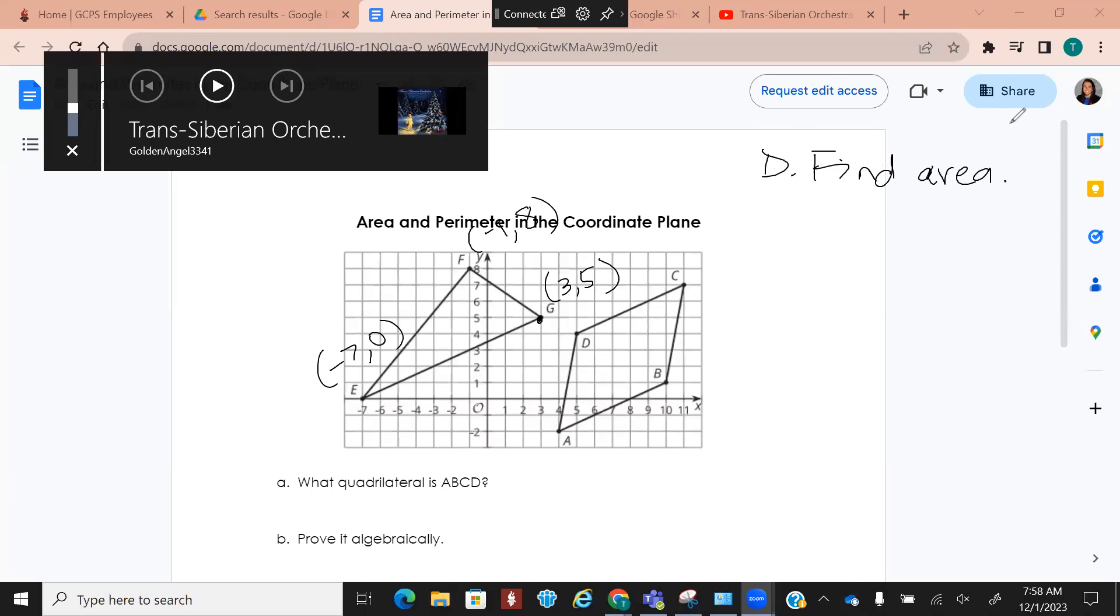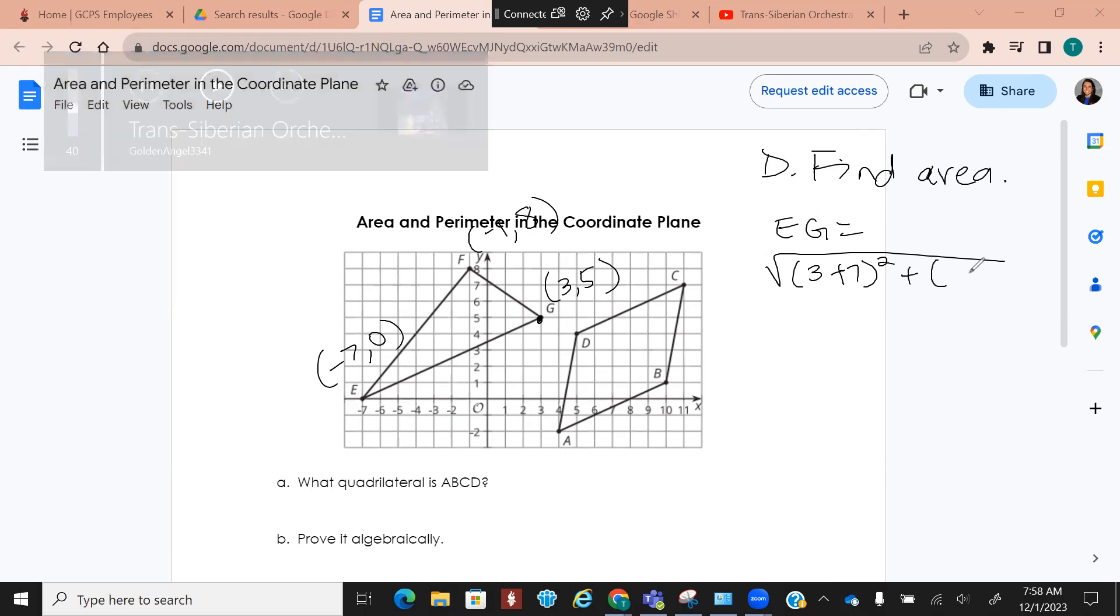So, I want to help you find the distance. So, we're on part D. We're finding the area. But you have to find the distance of all the different sides first. So, from E to G, we're going to find the distance. So, we're going to do 3 minus negative 7, which will give me plus 7 squared, plus 5 minus 0 squared. So, that's going to give me 10 squared, which is 100, 5 squared, which is 25. So, this will give me the square root of 125. Now, you could simplify that. And I probably would suggest doing that in your yellow calculator.